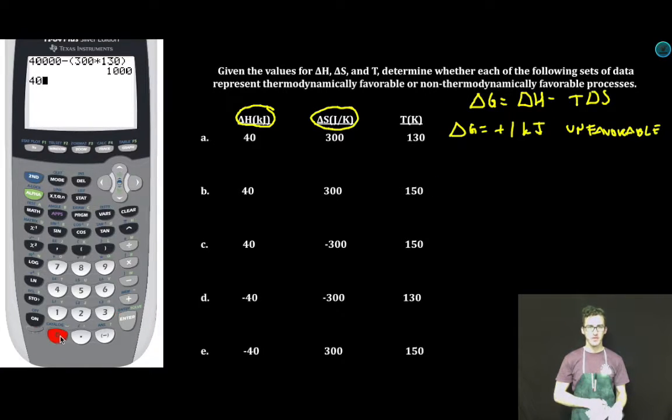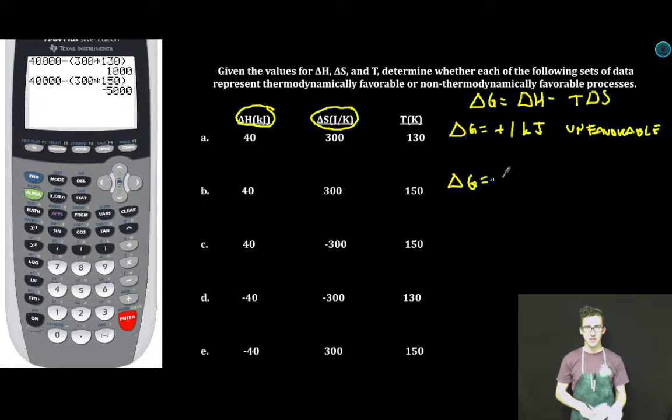Next example: 40,000 joules minus parentheses 300 times 150 close parentheses. Enter: delta G equals negative five kilojoules. Favorable. A negative delta G tells me so.